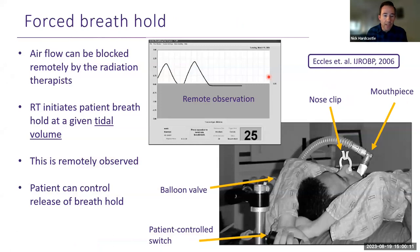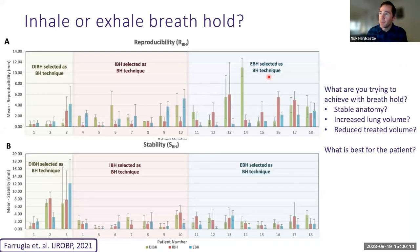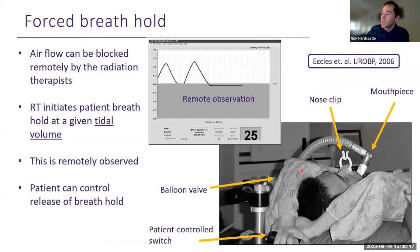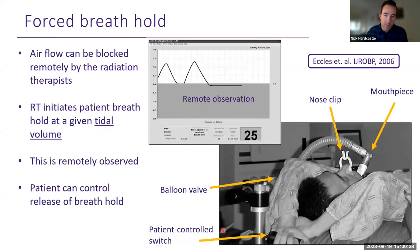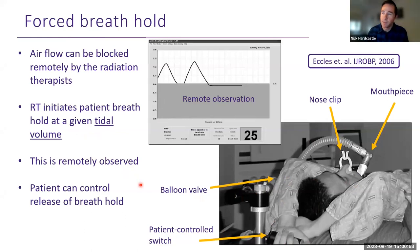Forced breath hold typically uses the ABC device — a nozzle the patient breathes through. When they're in the desired respiratory phase, the radiation therapist presses pause and the patient can't breathe through the device, holding them in position. They have a trigger to release it if needed and the beam turns off. This can be more reproducible than voluntary breath hold because it's based on tidal volume of the lungs, but there is a patient acceptance challenge compared with voluntary breath hold.